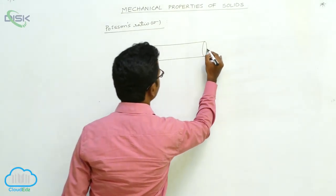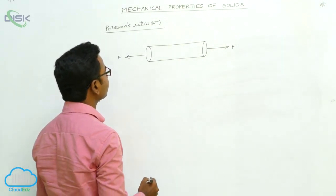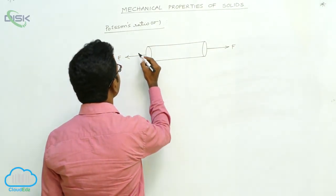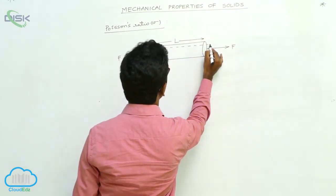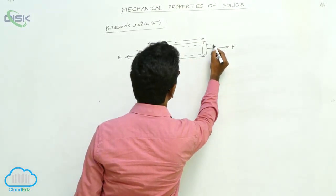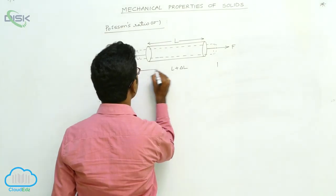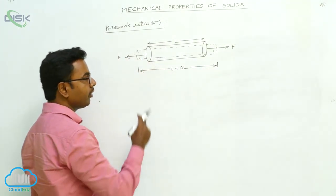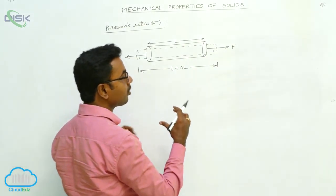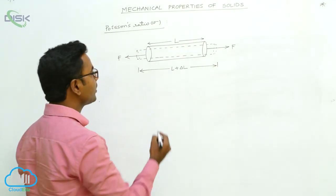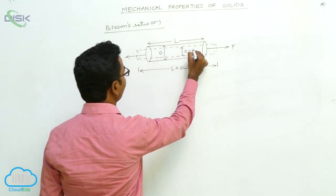Tensile stress increases the length. This is a wire with equal forces F and F acting in opposite directions so that its length is increased. Its initial length is capital L and its final length is L plus delta L. When the wire is subjected to tensile stress, there is elongation along the length, but in the perpendicular direction there is contraction — along the diameter we observe a decrease. Initially the diameter was D, and thereafter it decreased to D minus delta D.